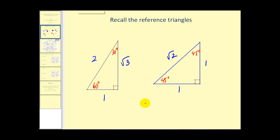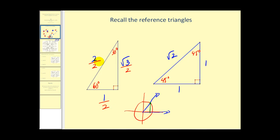Just to refresh your memory, when we have the unit circle, the radius of this circle is equal to one. So if we sketch an angle in standard position and sketch our reference triangle, the hypotenuse of this triangle equals one unit. Going back to our reference triangles, if we take the hypotenuse of the 30-60-90 triangle and make it equal to one by dividing by two, we divide everything by two: two divided by two equals one, the long leg becomes square root of three over two, and the short leg becomes one-half. These are the values we'll see on the unit circle, because the hypotenuse of the reference triangle corresponds to the radius of the unit circle.